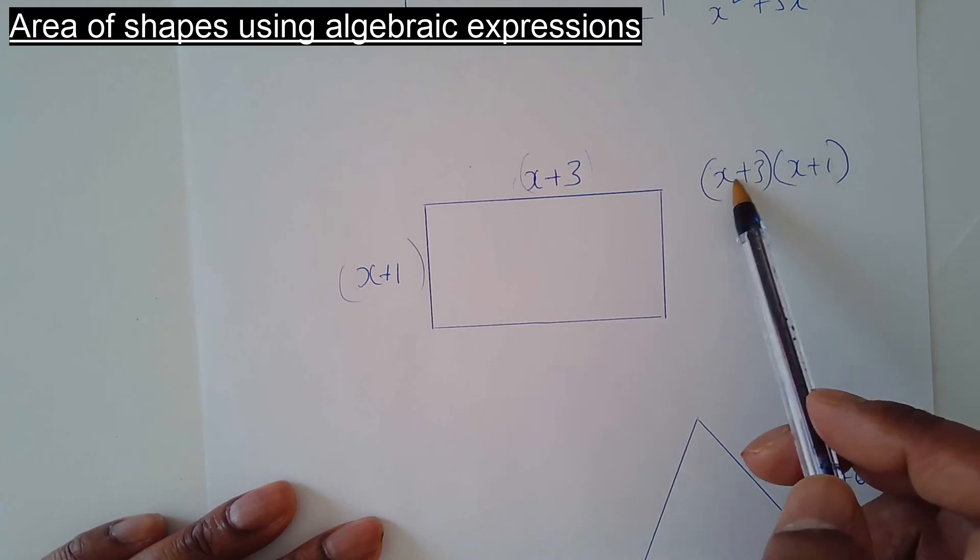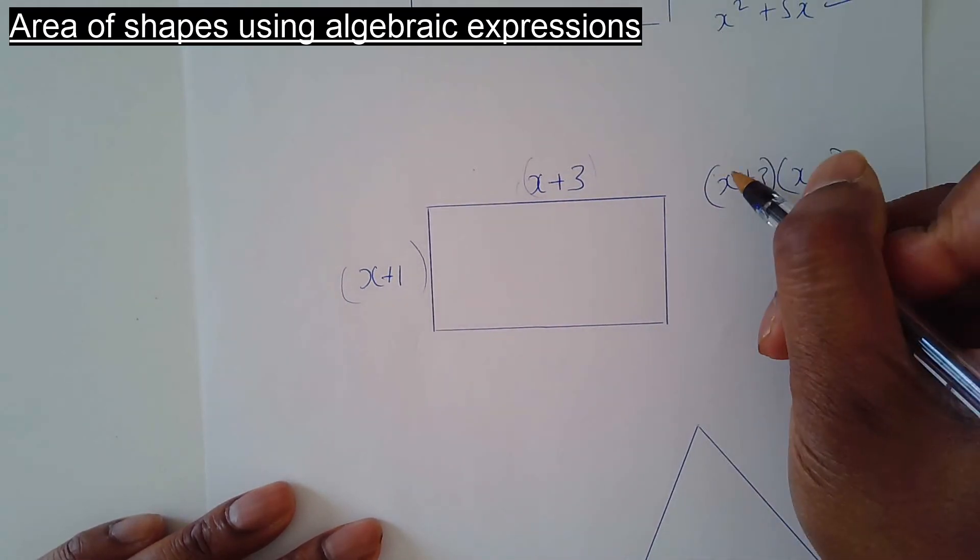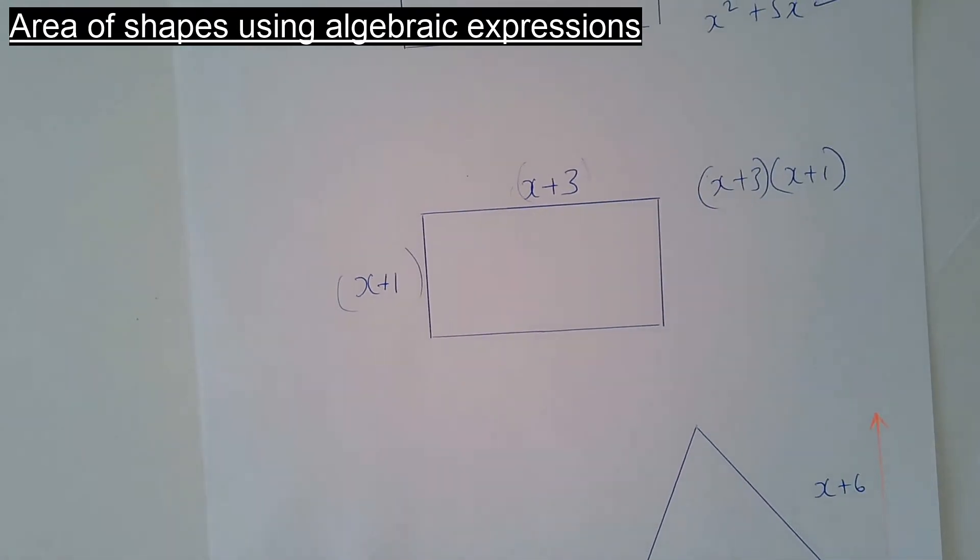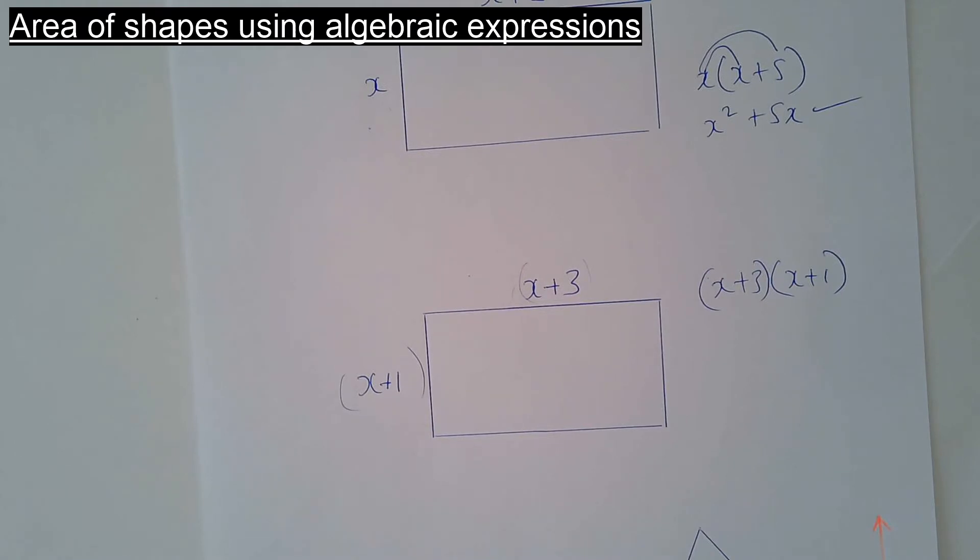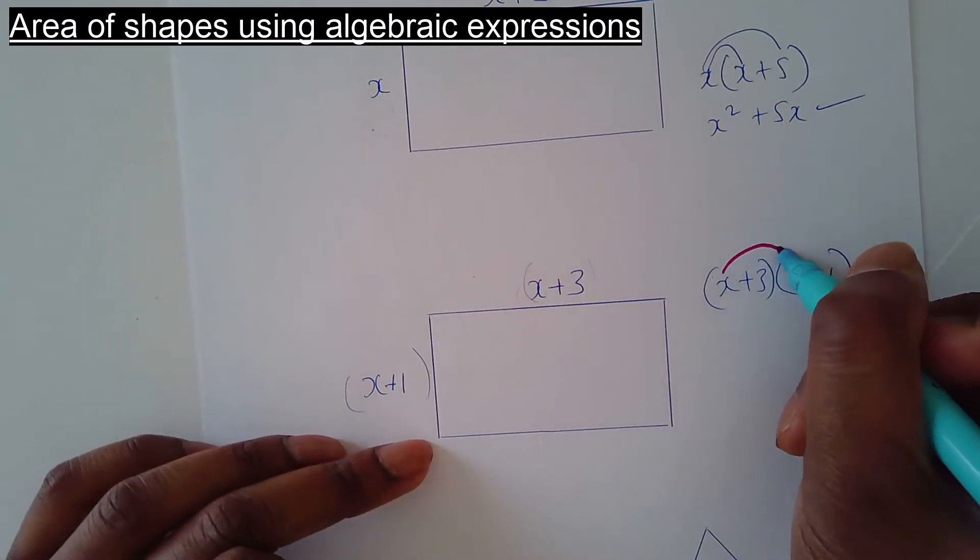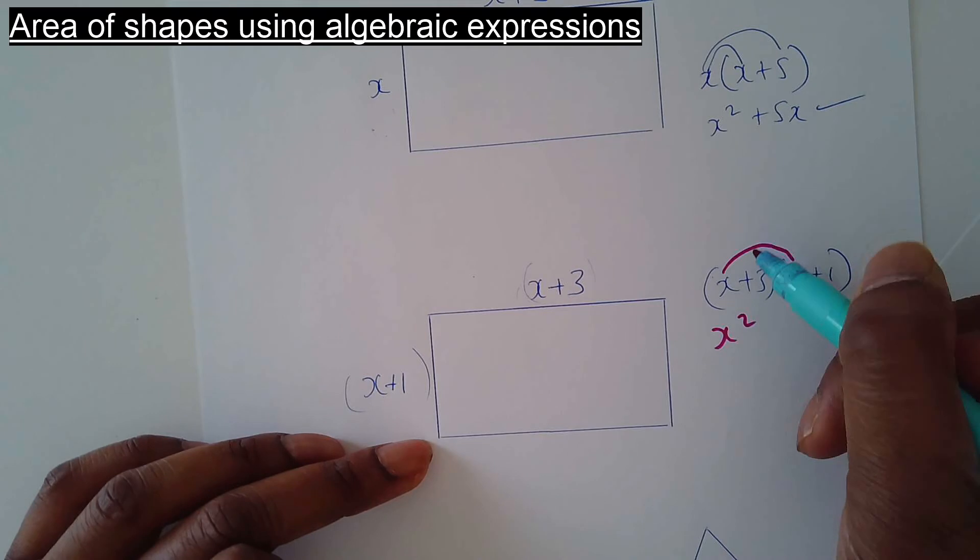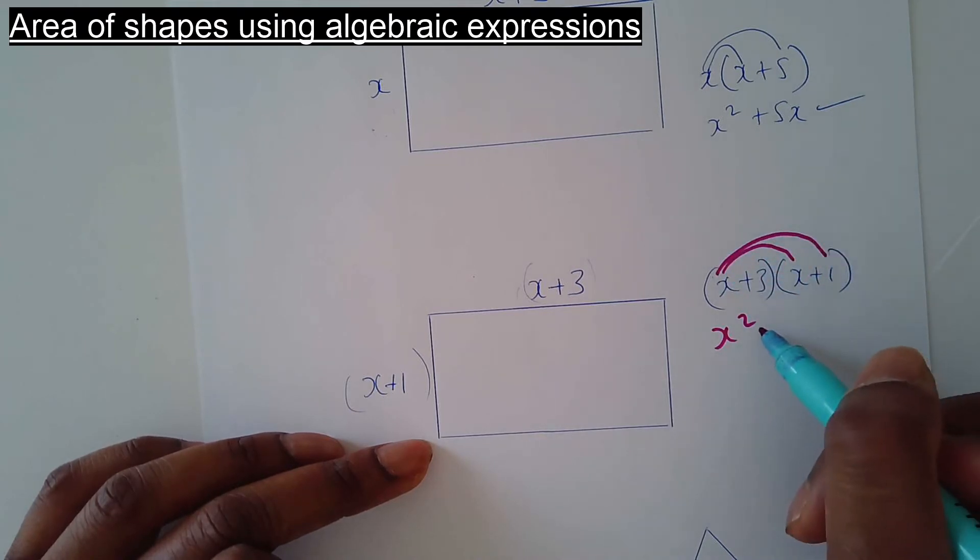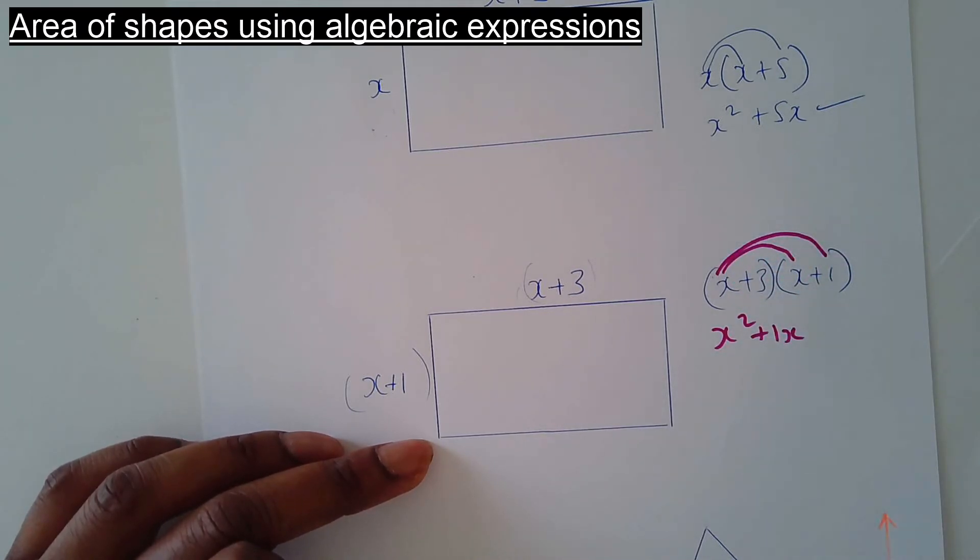So this is expanding brackets. x times x is x squared, x times 1 is 1x or just x. 3 times x is 3x, 3 times 1 is 3.